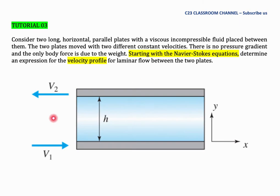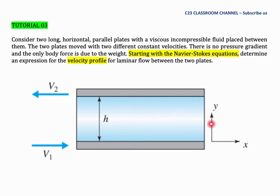We have two plates with a fluid between them. The gap is denoted as H. We take the horizontal direction as x and the vertical direction as the y-axis. The bottom plate is not fixed — it is moving from left to right with a velocity v1.